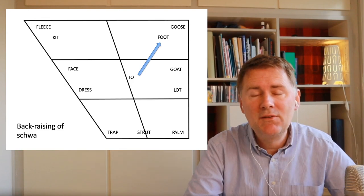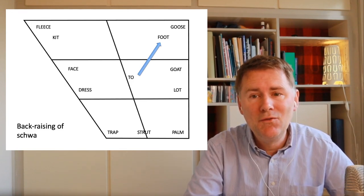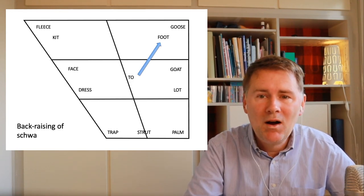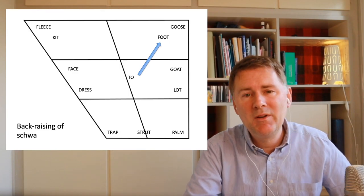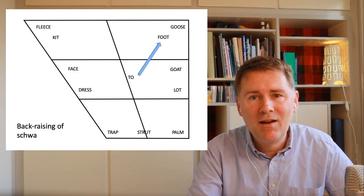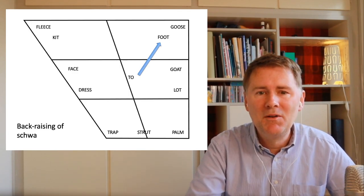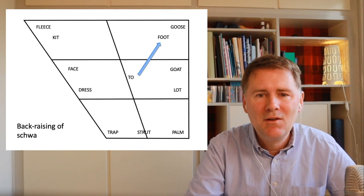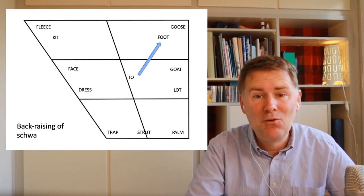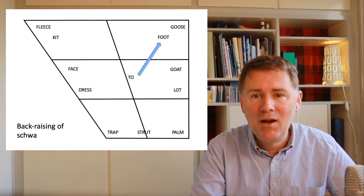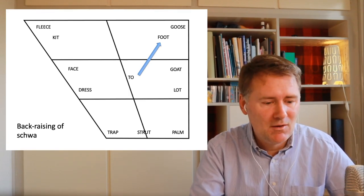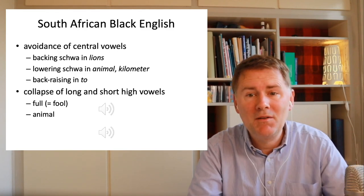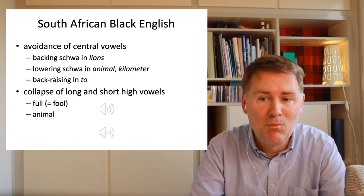So all of this illustrates the avoidance of central vowels: schwa tends to be realized not as a weak central vowel but instead as a STRUT vowel, a LOT vowel, or a FOOT vowel.